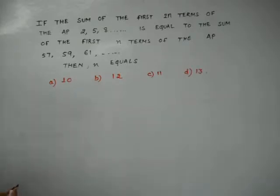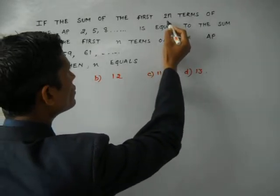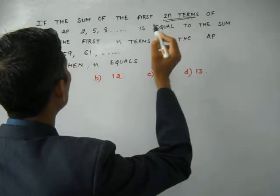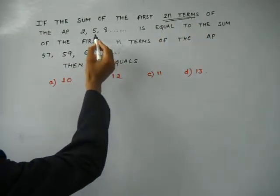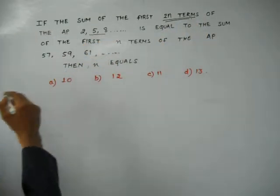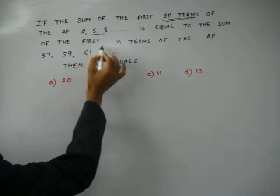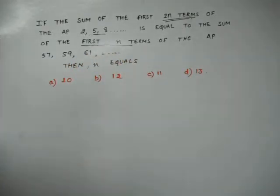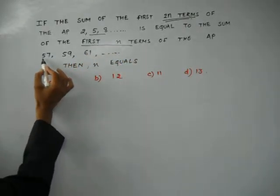That the sum of the first 2n terms, so this is 2n, of this AP is equal to the sum of the first n terms of another AP, this one.